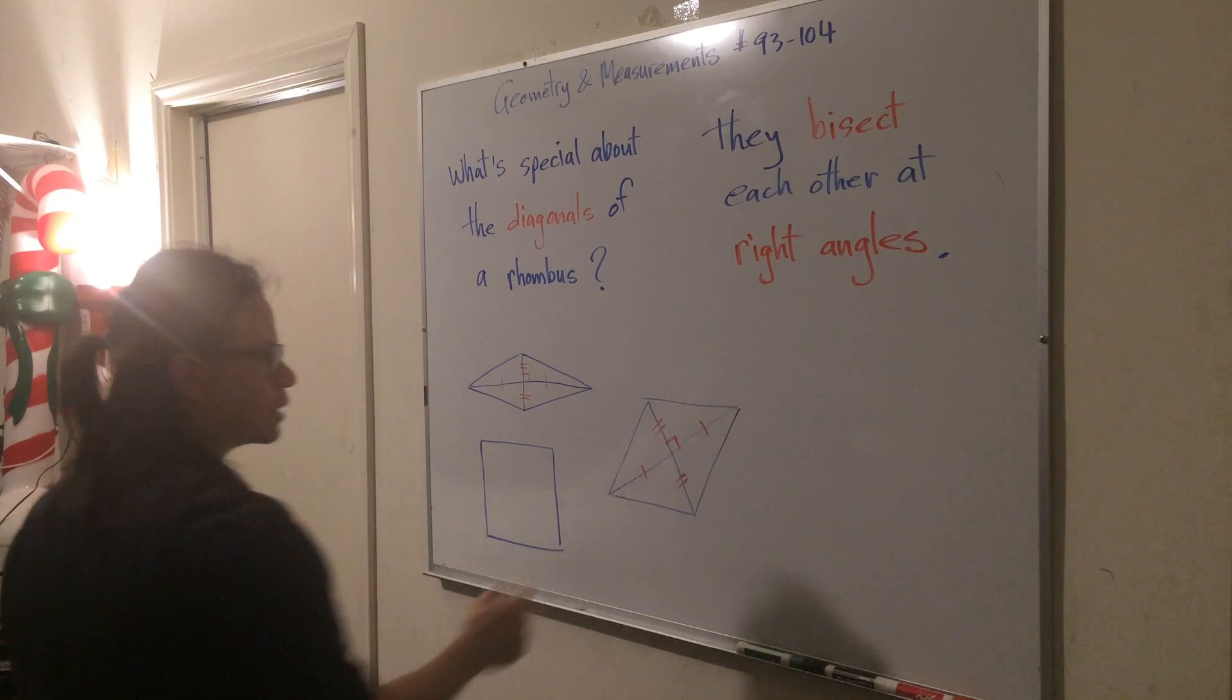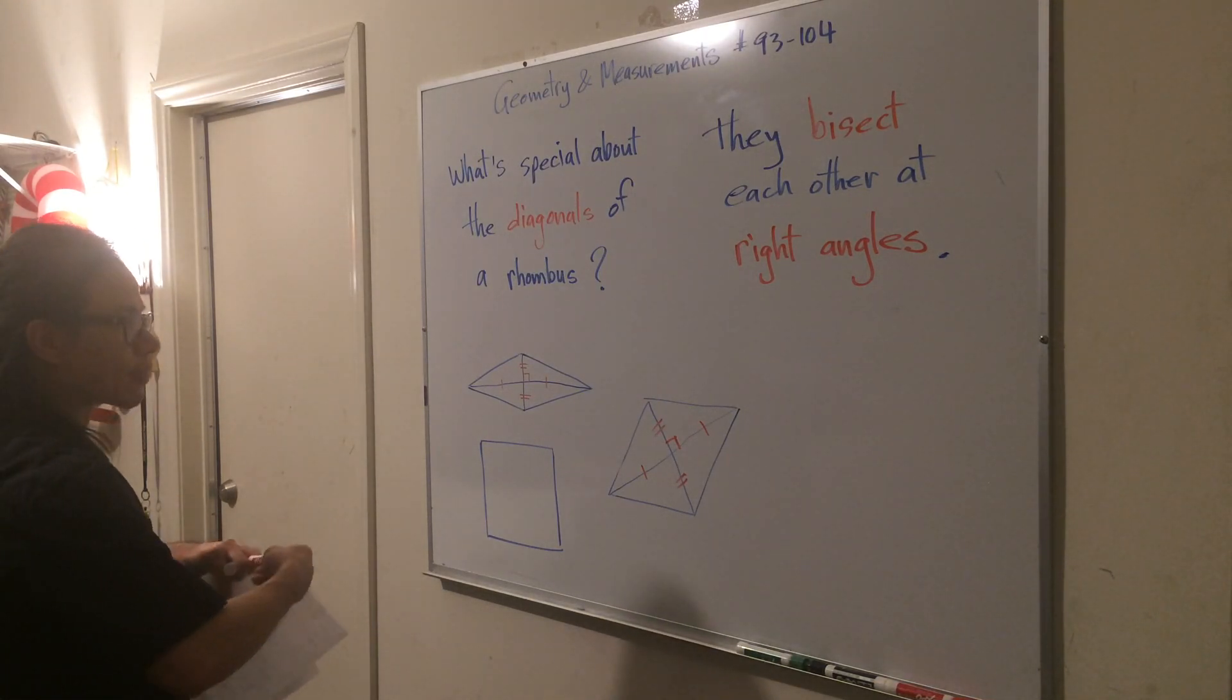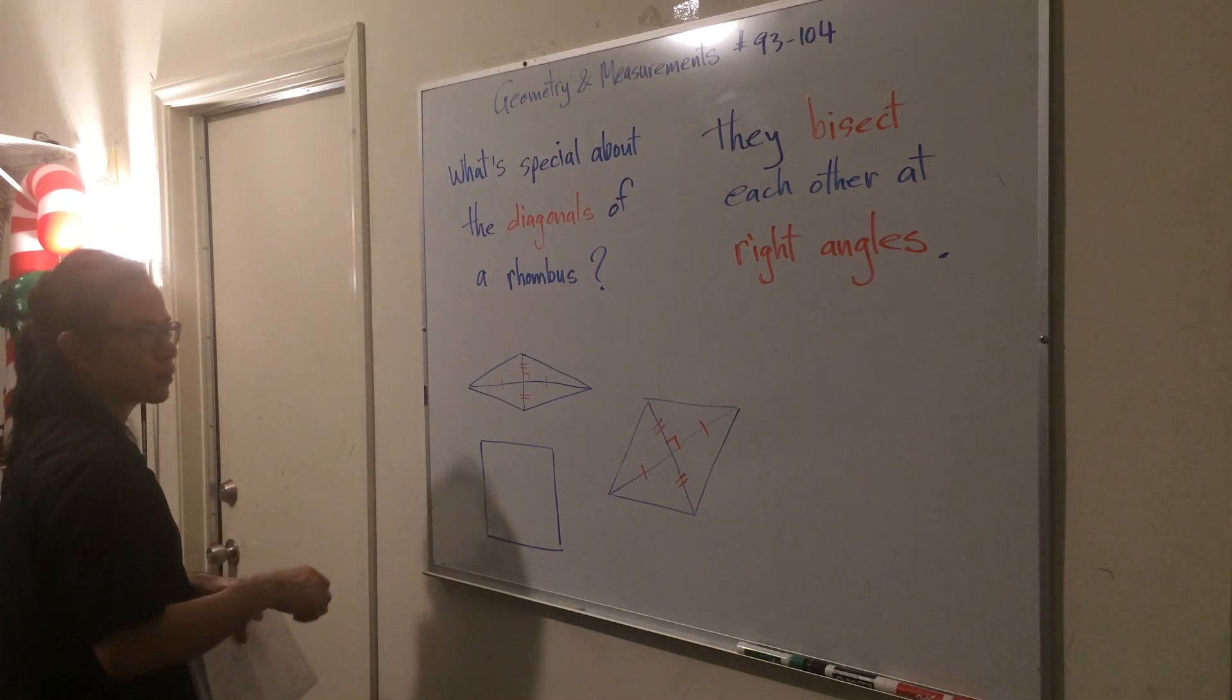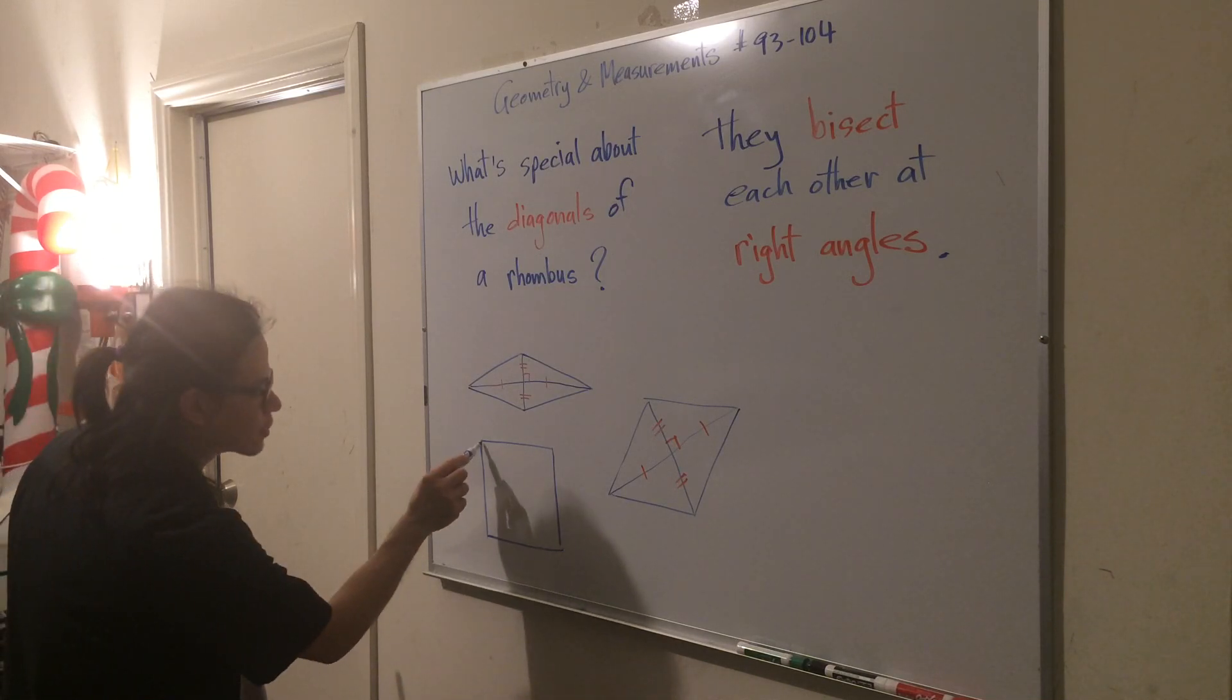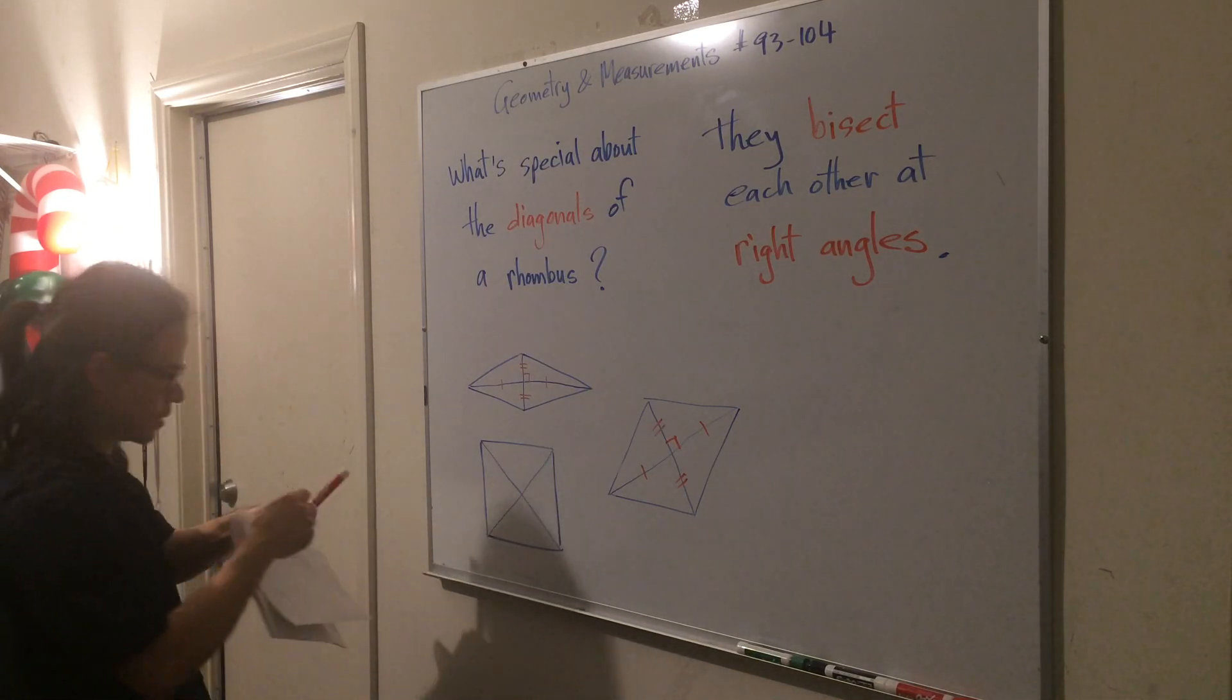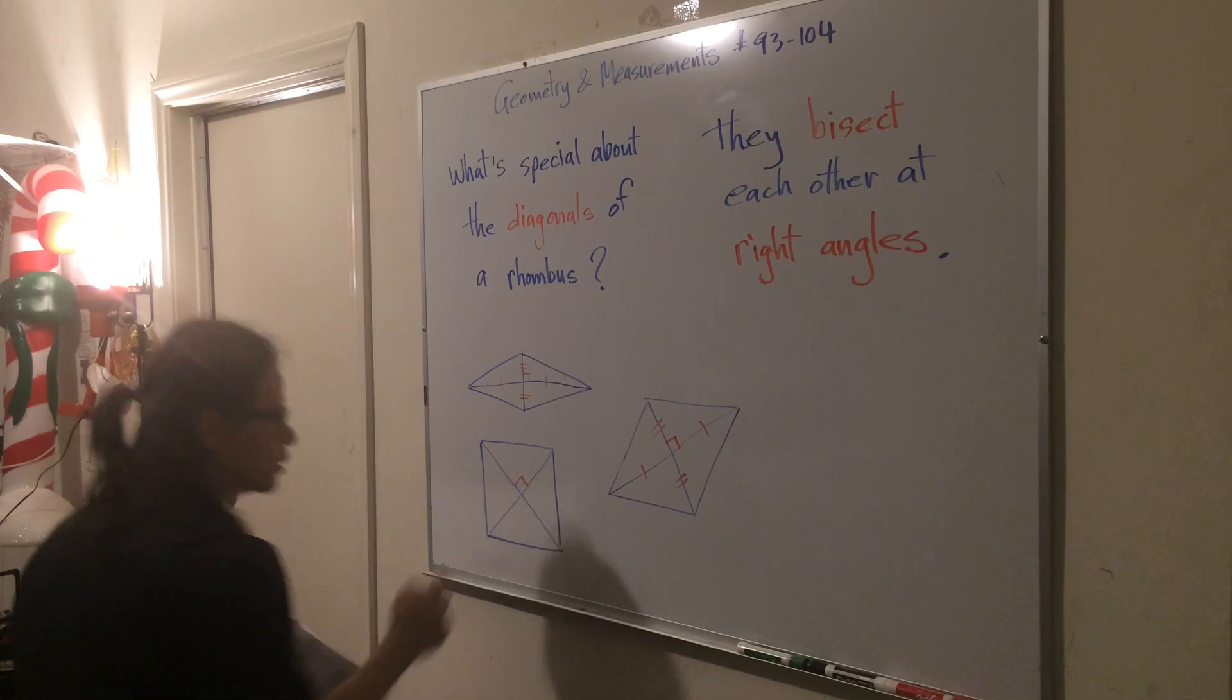Believe it or not. Okay, so let's look at one more: draw in the diagonal for this square. So here it goes like this. Again, it might not look like it, but you have a right angle here.